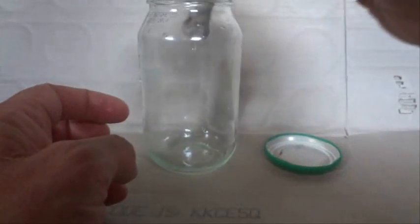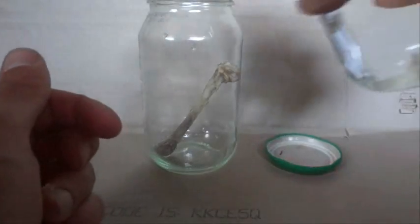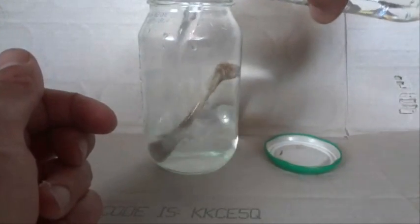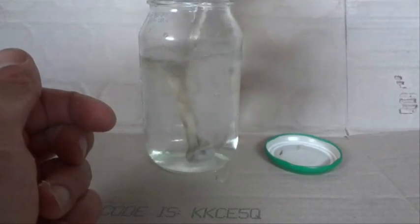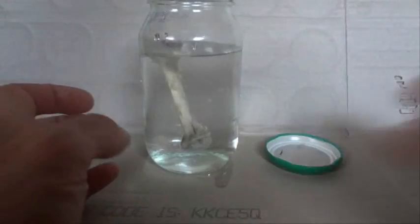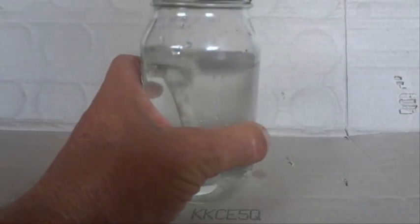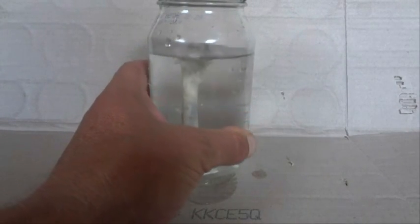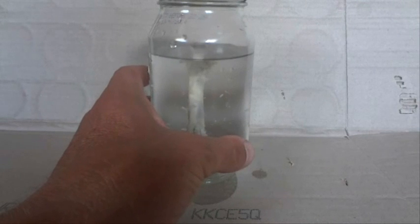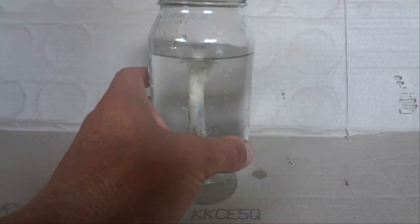So what we're going to do is pop that in a jar, chicken bone in a jar, and we'll fill it up with vinegar. Yep, put the lid on, and we'll come back in a couple of weeks, or maybe a week or two, and see what's happened to the chicken bone.